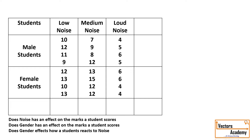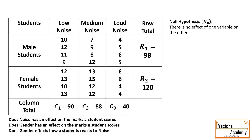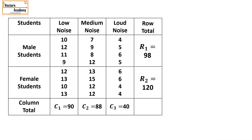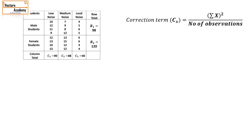Let us start by defining our null hypothesis. Our null hypothesis is that there is no effect of one variable on another. Now we will start with our calculation. First of all, we need to have the row total as well as the column total. Once we have that, we can calculate the correction factor. Just as in one-way ANOVA, the correction factor is given by the square of the summation of all the given readings divided by the number of observations.